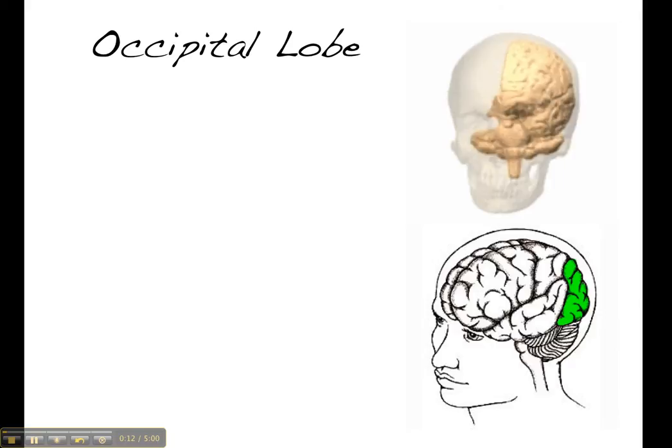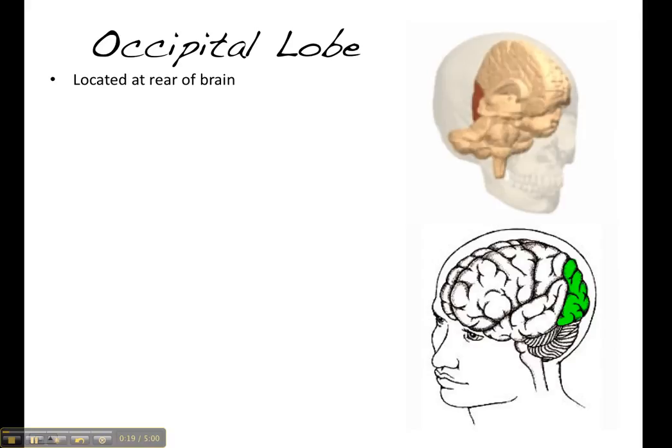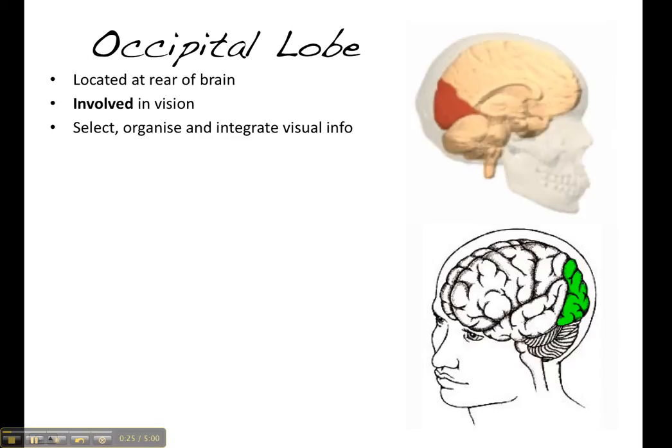Now, the occipital lobe, in a bit of a funny twist, is actually located at the back of our brain, so right away from where you would think it would be, which is right next to the eyes. It selects, organizes and integrates visual information, and it works with the other lobes in order to be able to do this.